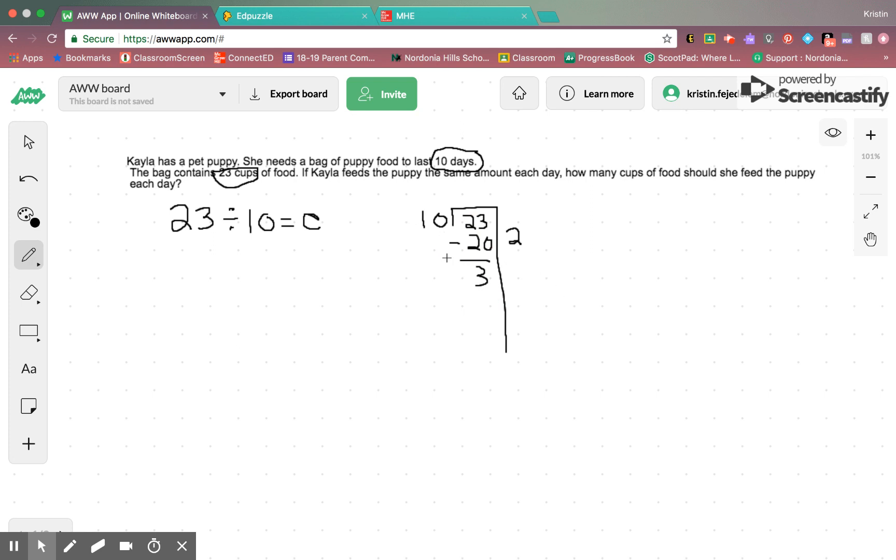Can we take any more 10s out of 3? In this case, we cannot, so that means that we have 2 cups with the remainder of 3. Our remainder in unit 2, we said we could either ignore it or round it up. But, now we are going to talk about making it into a fraction, because it would be wasteful to ignore it, and we cannot round it up because we don't have enough food. So, the other option we have is changing into a fraction.